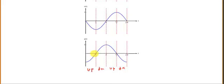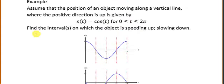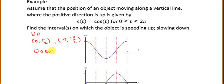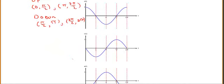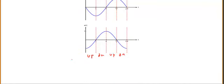So the object is speeding up on the intervals from 0 to pi over 2 and from pi to 3pi over 2, and slowing down on pi over 2 to pi and 3pi over 2 to 2pi. To summarize: starting with a position function, the first derivative is velocity and the second derivative is acceleration. Speed is the absolute value of velocity. If velocity and acceleration have the same signs, we're speeding up; if they have opposite signs, we're slowing down.